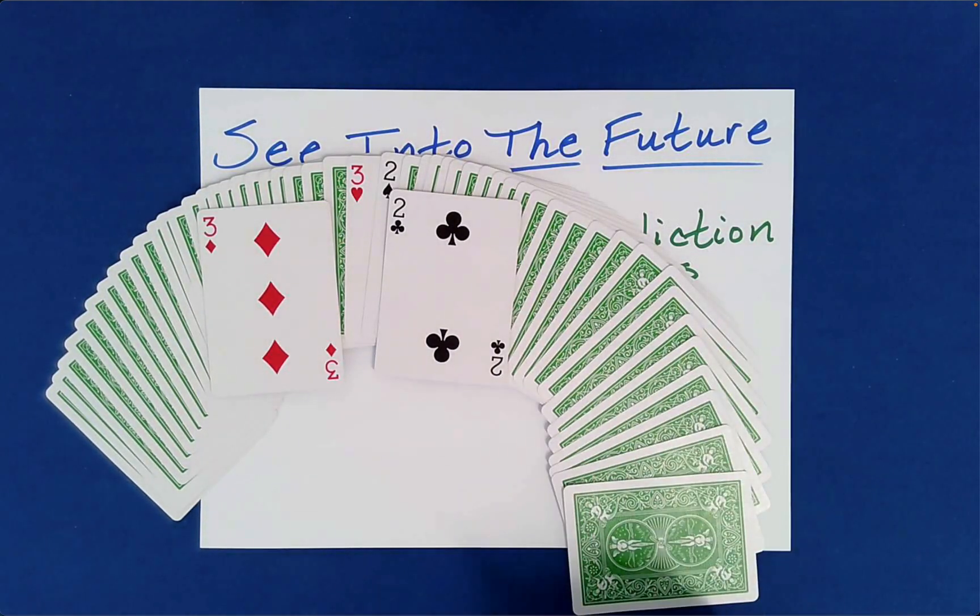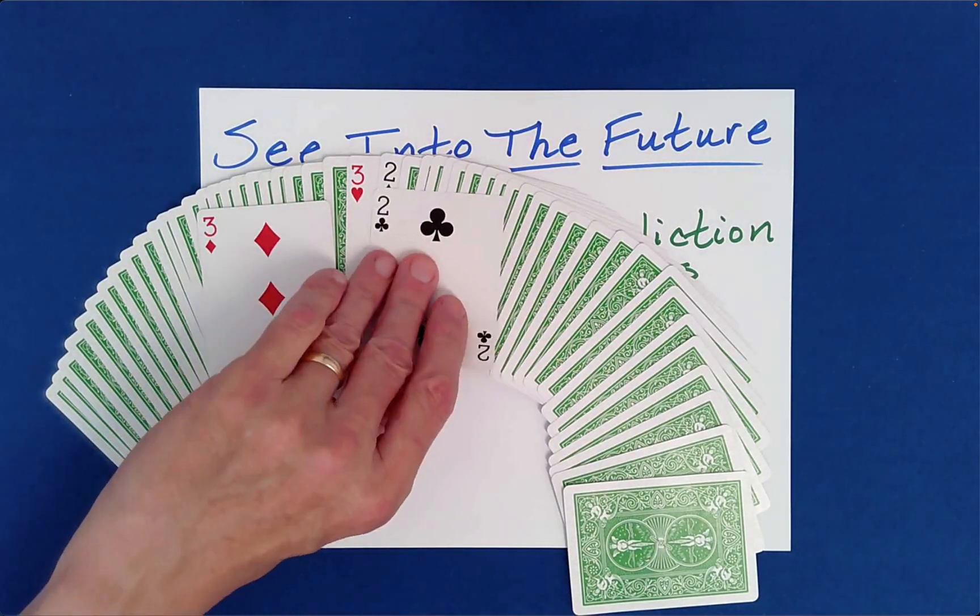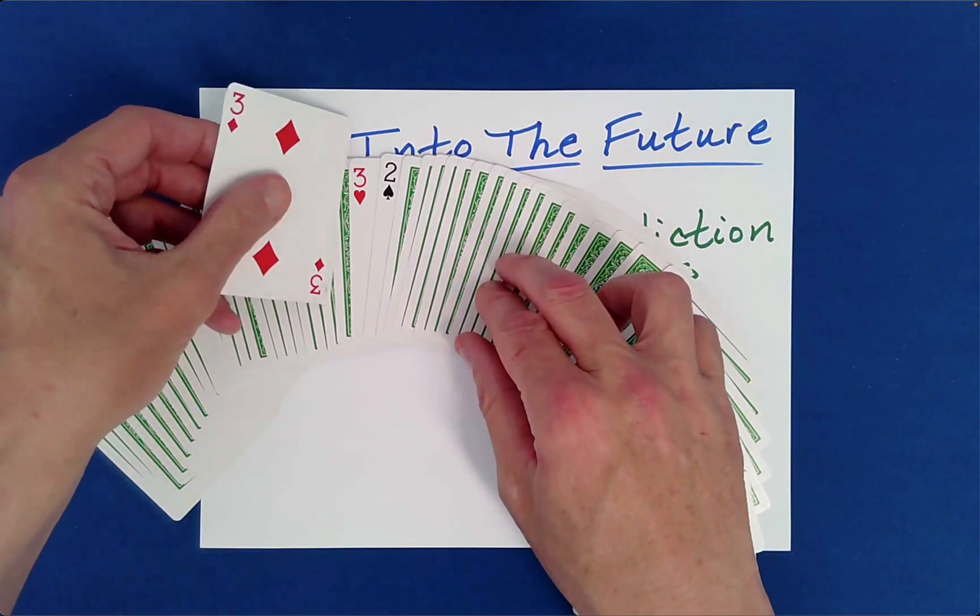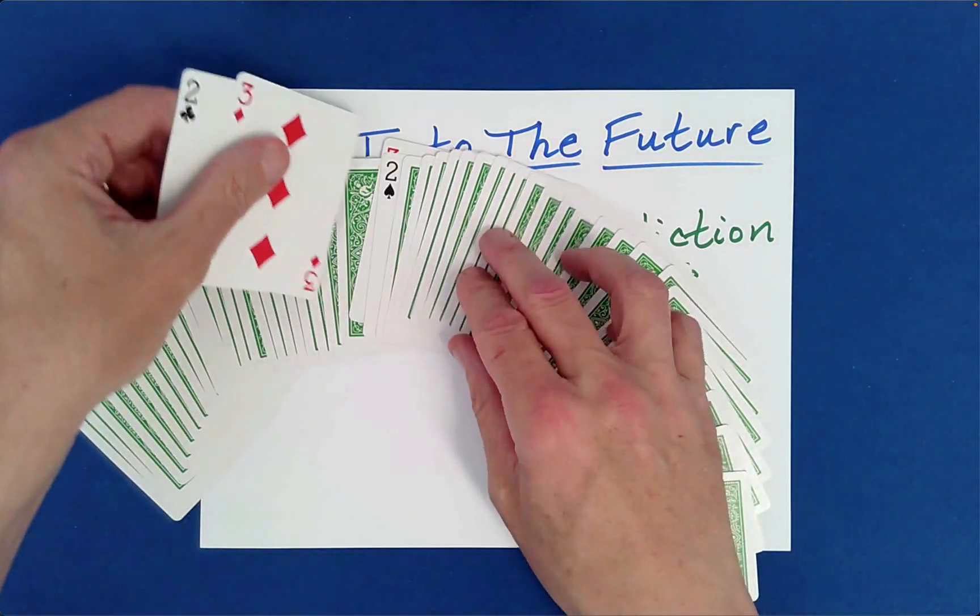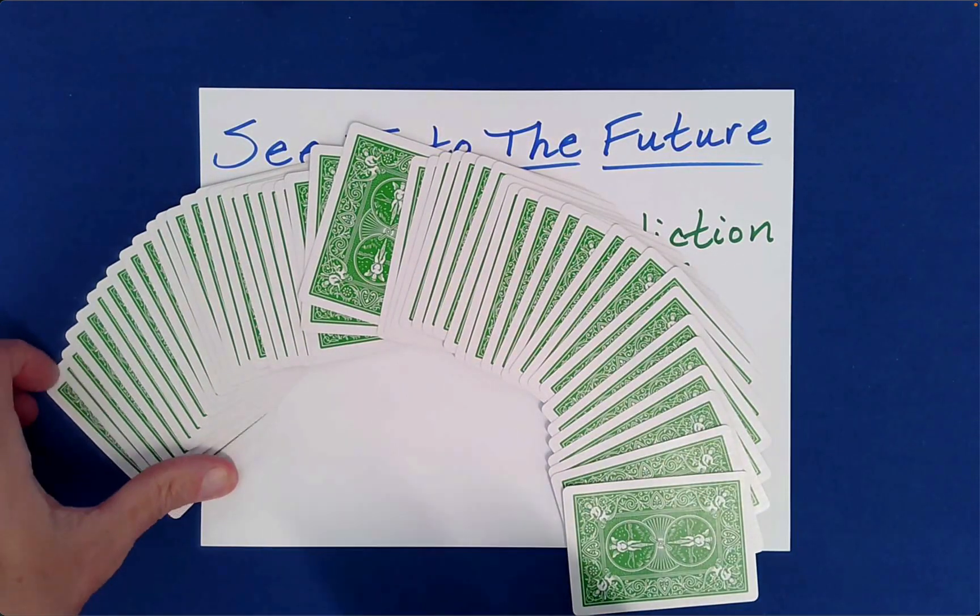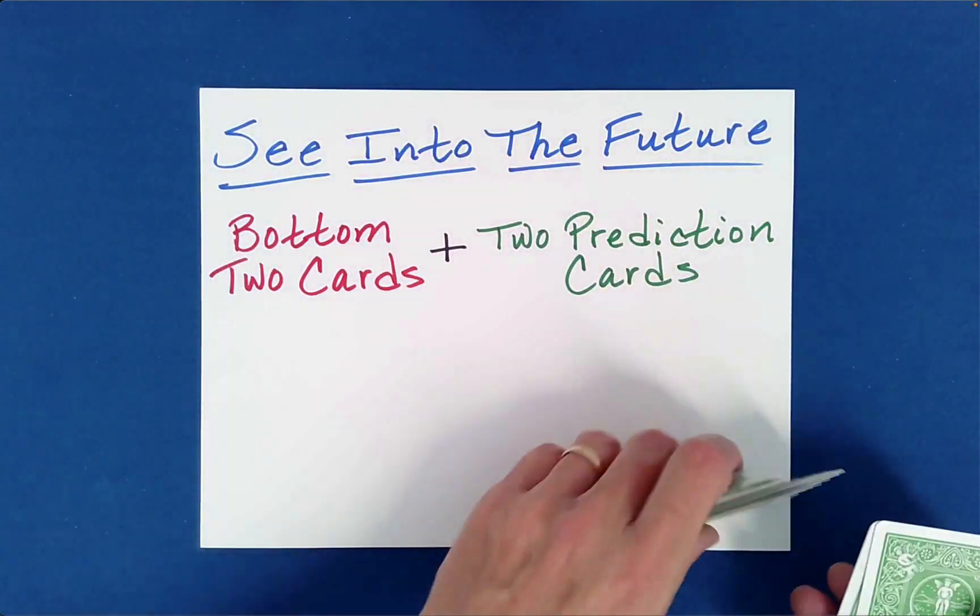And then you can kind of, you know, slowly have your eyes, you know, fall on your two prediction cards and go, oh, wait a second. I chose two prediction cards, right, at the beginning? I wonder what these are. What? Companion card to the... There's no way this is the three of diamonds, right? There's... Oh, man.